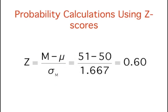Before statisticians could get hold of these fantastic calculators, they had to find probabilities the old-fashioned way. They did probability calculations using z-scores and the standard normal distribution. To do this, compute z using the formula shown here. z is a value on the standardized normal distribution, m is the sample mean, mu is the hypothesized value of the mean, and sigma sub m is the standard error of the mean. For this example, z is equal to 51 minus 50 divided by 1.667, which equals 0.60.